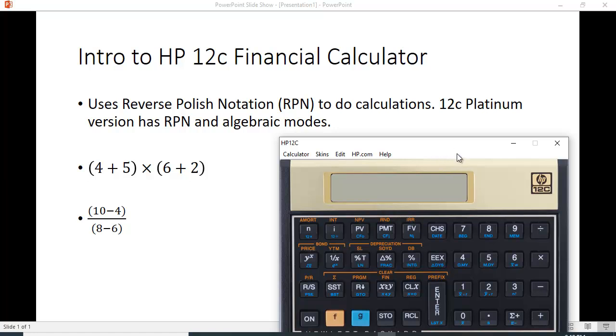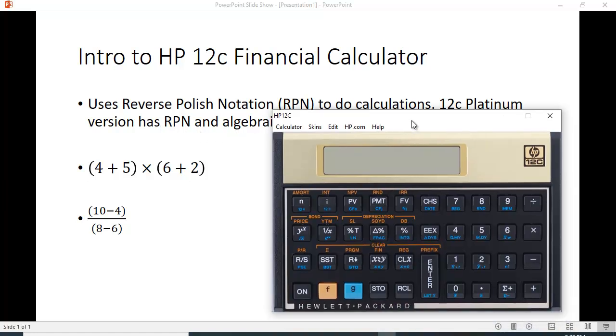The 12C is a little bit different to use because it uses Reverse Polish Notation, RPN. This was proposed by a Polish mathematician and you input the numbers differently than we're used to doing it. There is a 12C Platinum version that has both RPN and algebraic modes.